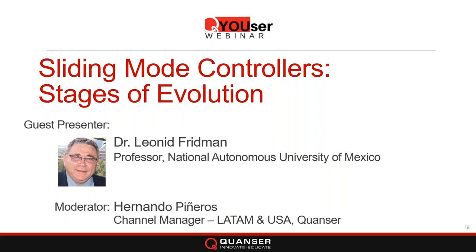Dr. Friedman received a PhD degree in Applied Mathematics from the Institute of Control Science, Moscow, Russia in 1988, and a Dr. Science degree in Control Science from Moscow State University of Mathematics and Electronics in 1998. From 1976 to 1991 he was with the Department of Mathematics at Samara State Architecture and Civil Engineering University. From 2002 he was at the Chihuahua Institute of Technology in Mexico, and then he joined the Department of Control Engineering and Robotics at UNAM, the National Autonomous University of Mexico.